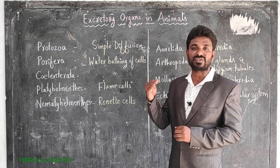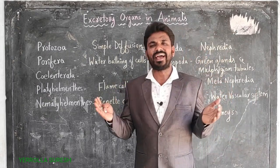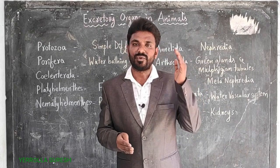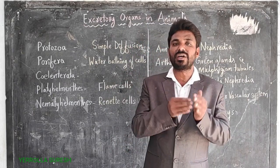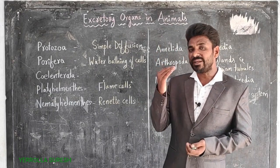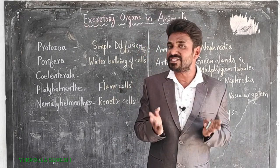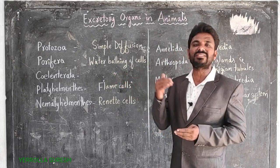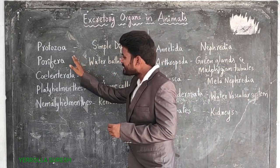All animals are broadly divided into two kinds: vertebrates and non-vertebrates. This classification is based on the presence of a backbone or spinal cord. Vertebrates are organisms having a spinal cord; non-vertebrates are organisms without a spinal cord. Let's see what kinds of excretory organs are present in both vertebrates and non-vertebrates.